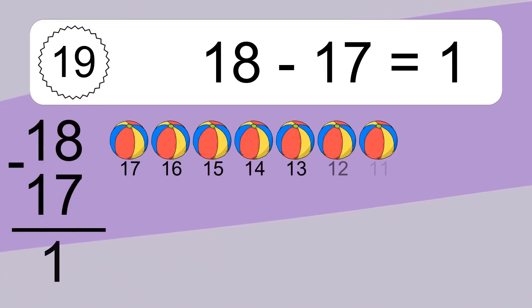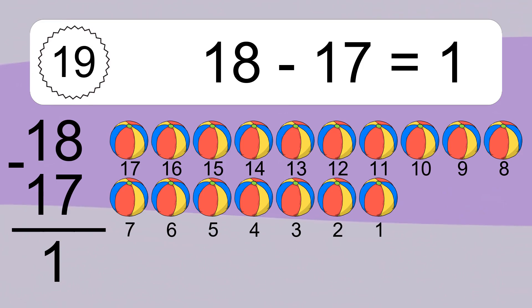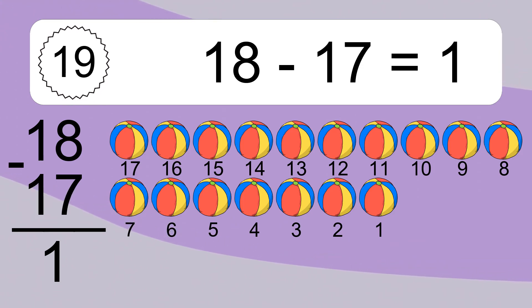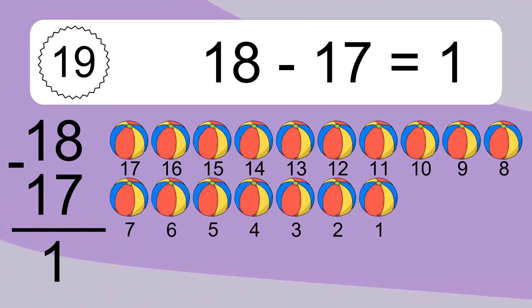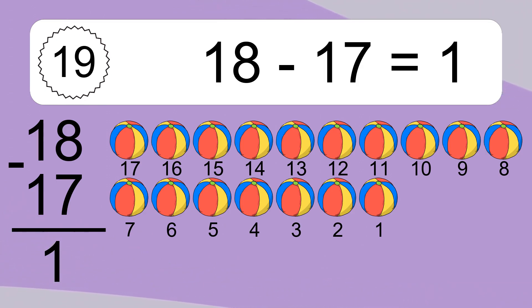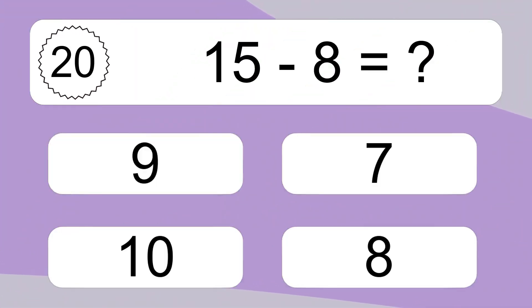18 minus 17 equals 1. Let's count it: 17, 16, 15, 14, 13, 12, 11, 10, 9, 8, 7, 6, 5, 4, 3, 2, 1.